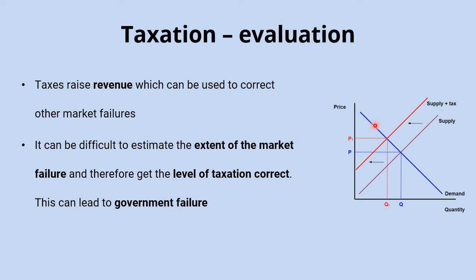Or who's to say the noise pollution impact won't actually be that great — perhaps only a couple of households are affected, meaning the socially optimal equilibrium is different from what we assumed and the tax we've put in place is having too big an impact on the market. It's really about how we get taxation absolutely right, and that's very difficult — if not impossible — to perfectly correct the market failure. If we do get it wrong, that leads to government failure.